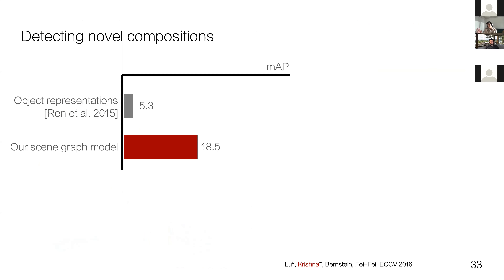This model improved mean average precision for detecting novel compositions by about three times compared to a variant that used object features to predict relationships. While this result was encouraging, we wanted to increase performance further, so we analyzed common sources of error.